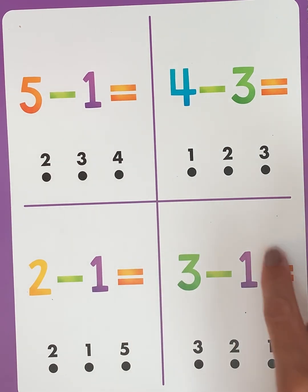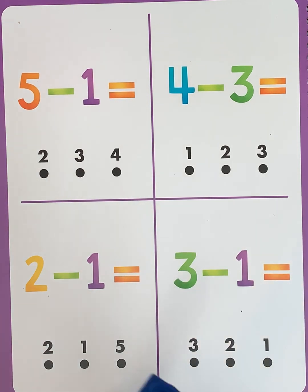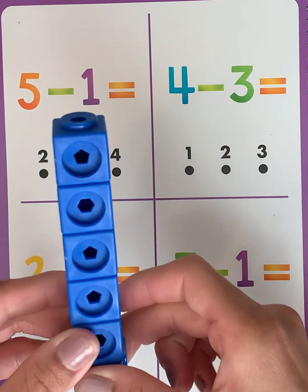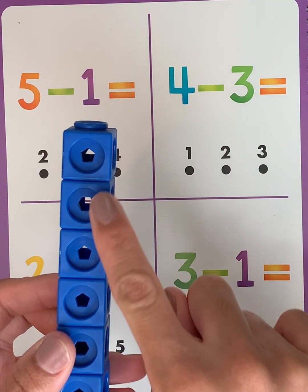And our last problem for today is 3 minus 1. Let's see what that equals. We have blue cubes. And we want to start off with 3: 1, 2, 3.